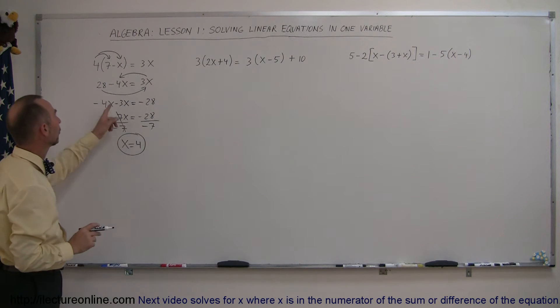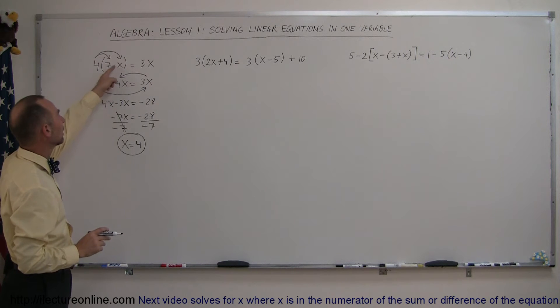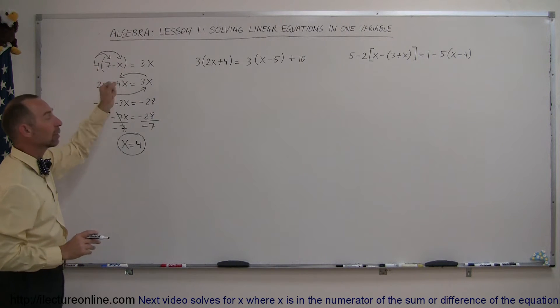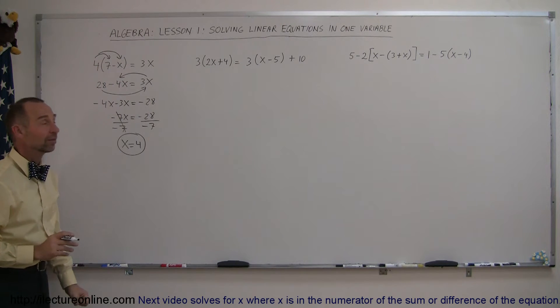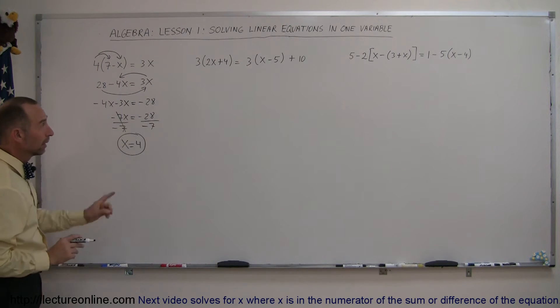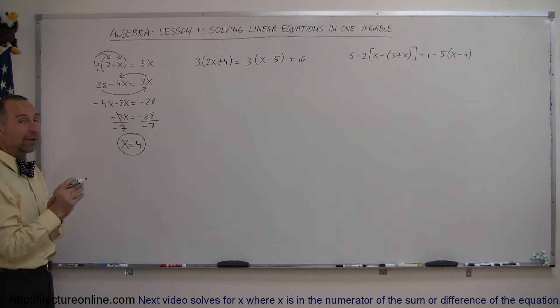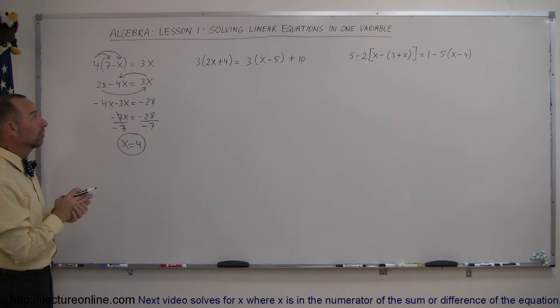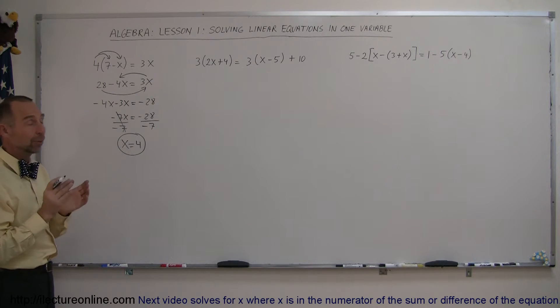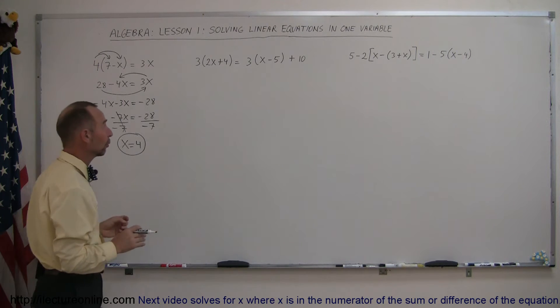x equals 4 — when plugged in, makes the left side equal to the right side. Looking at our second example, now we have two sets of parentheses, and again we get rid of the parentheses first.